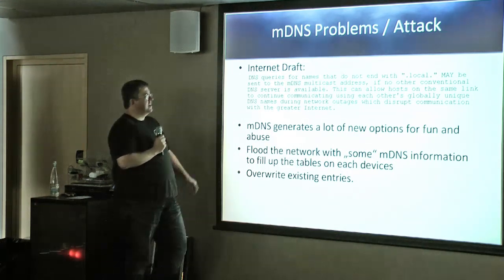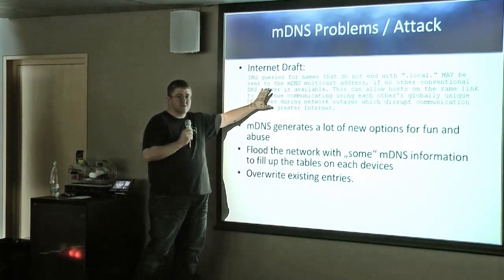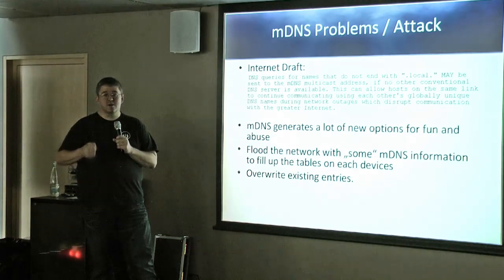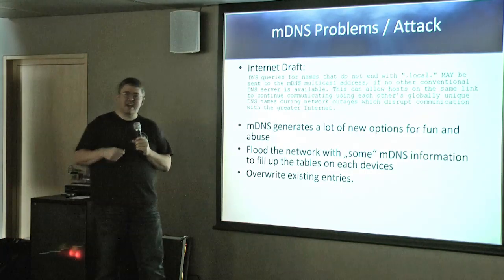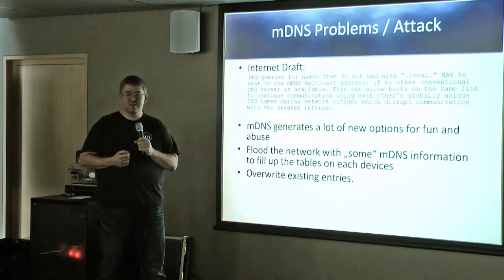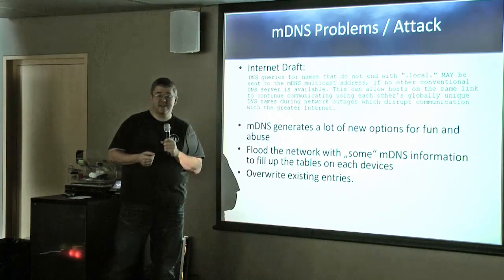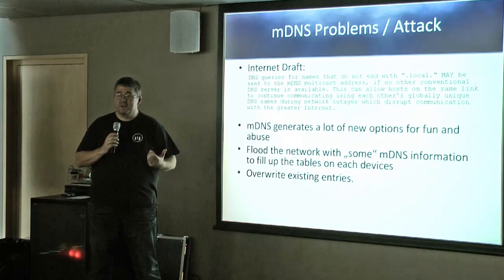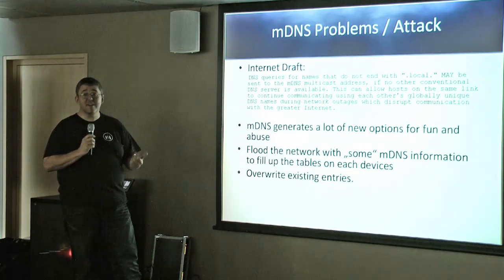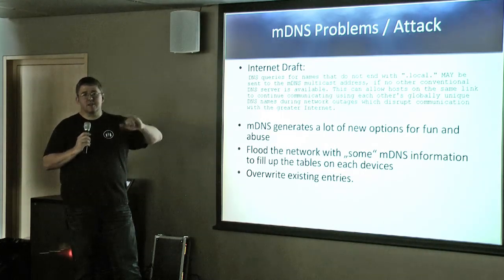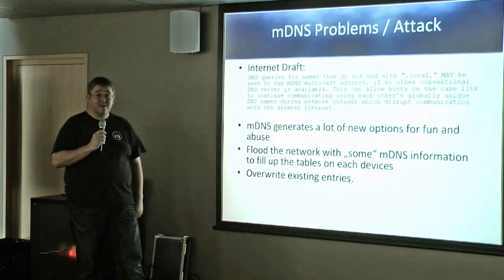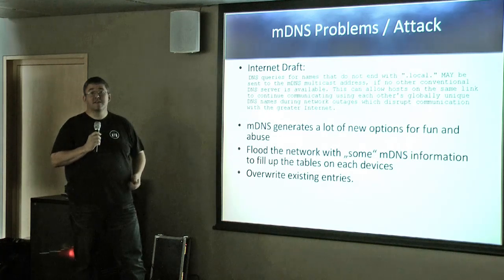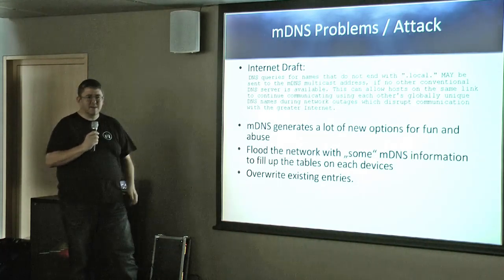Regarding multicast DNS attacks: this protocol sends out packets with the .local name, and every client in the network receives and stores this in its local cache. If an attacker sends large amounts of wrong information to the multicast address, every client must store it. The packet includes a lifetime field — you can set it to two minutes, two days, or three weeks. There are also mechanisms to override existing entries. We are creating tools to test this and potentially trigger buffer overflows.